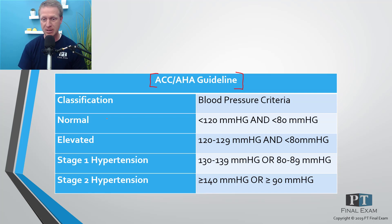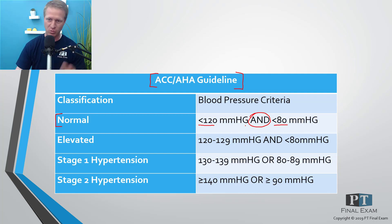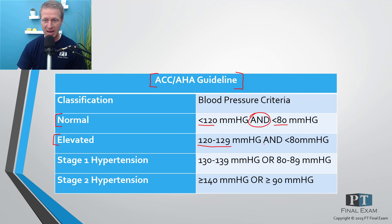These new blood pressure guidelines have been adopted and accepted pretty much universally across the system. To outline the classification guidelines: normal is now classified as below 120 systolic AND below 80 diastolic — remember this is an 'and.' So 120 over 80 is considered normal. Elevated is a new category: between 120 and 129 systolic AND below 80 millimeters of mercury.